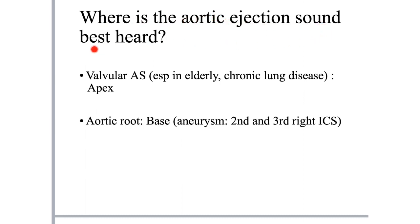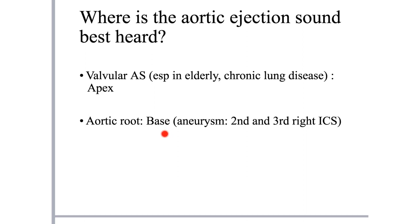The aortic ejection sound is best heard at the apex - this applies to valvular aortic stenosis related ejection sounds, most commonly bicuspid aortic valve, including those with chronic lung disease or elderly patients with aortic stenosis. However, for vascular origin aortic ejection sounds arising from the aortic root, the ejection sound is best heard at the base. If the aortic root is aneurysmal, the ejection sound is best heard in the second and third right intercostal space.